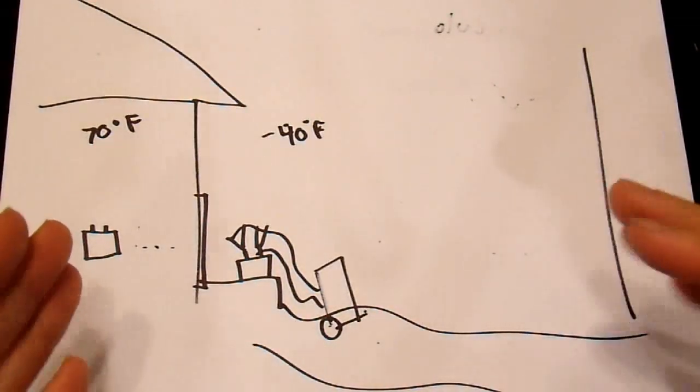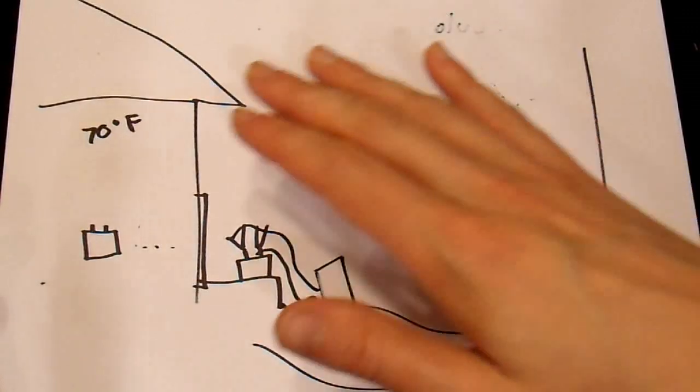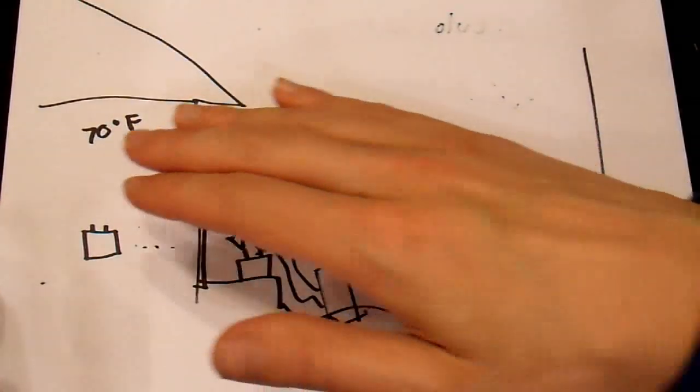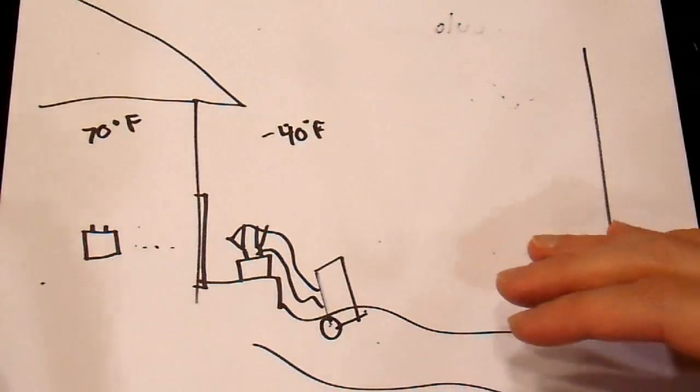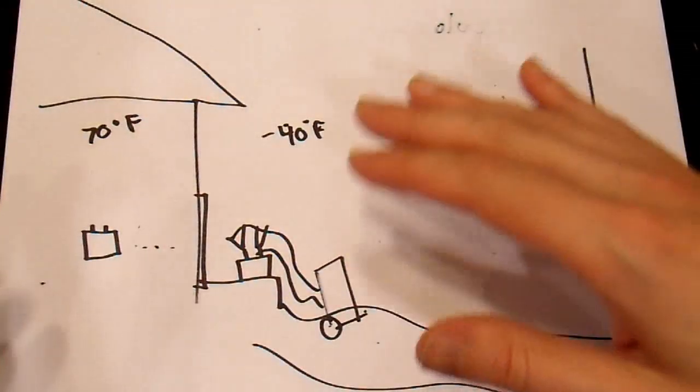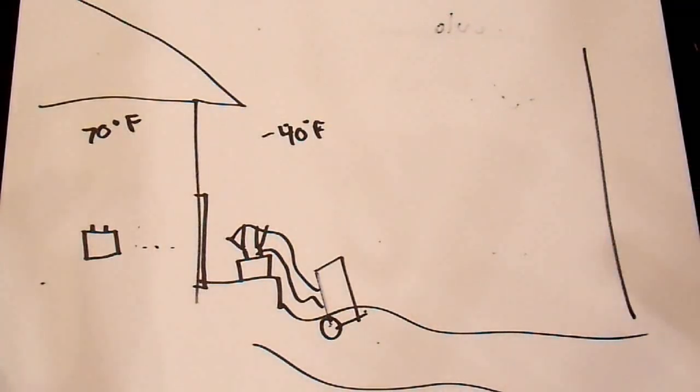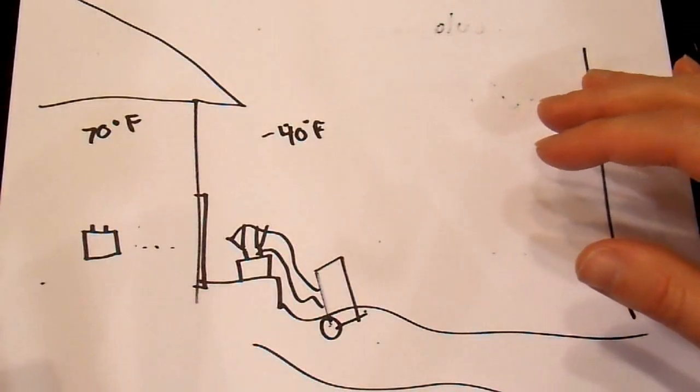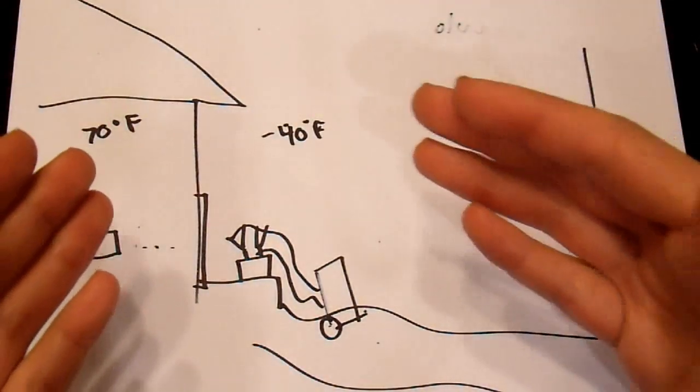One argument you could make to remedy this situation and for me to still be incorrect is to claim that somehow the temperature change of this going from minus 40 to 70 somehow drives some sort of chemical reactions so that there's an exothermic reaction that occurs when you transport the battery from one climate to the other and an endothermic reaction that occurs in the opposite direction. But that's just simply false.